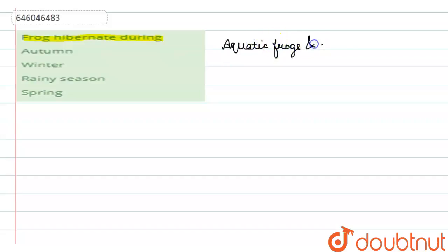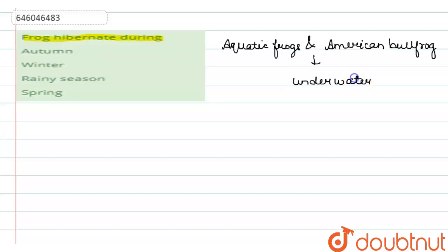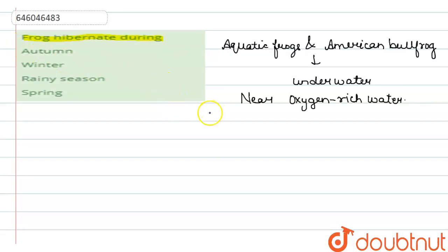Aquatic frogs, like the American bullfrog, hibernate underwater. These frogs that go into hibernation should be near oxygen-rich water. To make the water oxygen-rich, it should be free of pollution — the water should not be polluted, only then can it be oxygen-rich.